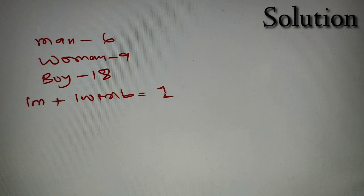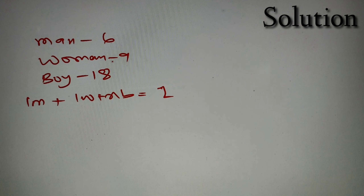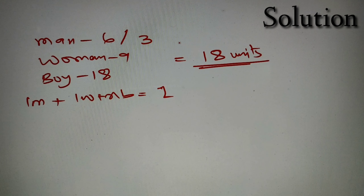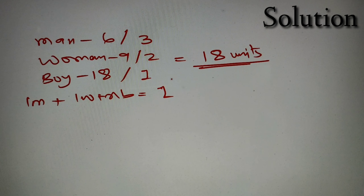The best possible approach to use in time and work is the units method. In this method, we find the LCM of the total number of days taken by man, woman, and boy to complete the piece of work, which is equal to 18. So the total units of work equals 18. In one single day, the man will do 18 divided by 6, which is 3 units. The woman will do 18 divided by 9, which is 2 units. A boy will do 18 divided by 18, which is 1 unit.